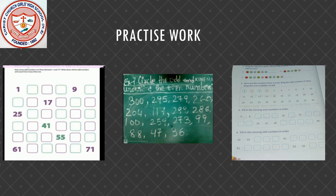Fill in the missing odd numbers in order. The answers are: 31, 33, 35, 37, 39, 41, 43, 45, 47, 49, 51, 53, 55, 57, 59, 61, 63, 65, 67, 69.